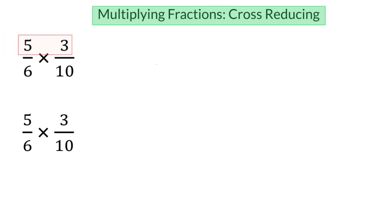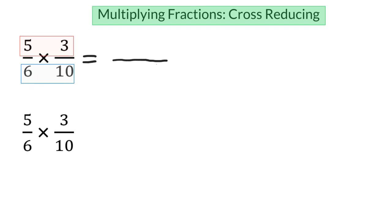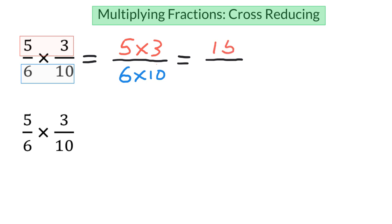In that tutorial, I told you that when you're multiplying fractions, you multiply the numerators and you multiply the denominators. So let's rewrite this just to review. The new numerator is going to be the product of 5 times 3, and the new denominator is going to be the product of 6 times 10. So then we would multiply them out: 5 times 3 is 15, and 6 times 10 is 60.